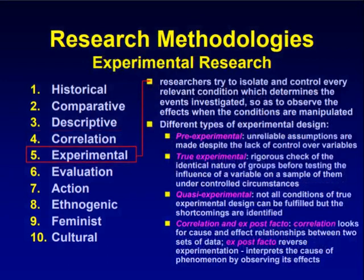In experimental research methodology, researchers try to isolate and control every relevant condition which determines the events investigated, so as to observe the effects when conditions are manipulated. Different types of experimental design include: pre-experimental, where unreliable assumptions are made despite the lack of control over variables; true experimental, with rigorous checks of the identical nature of groups before testing the influence of a variable under controlled circumstances; quasi-experimental, where not all conditions can be fulfilled but shortcomings are identified; and correlation and ex post facto, where ex post facto reverse experimentation interprets the cause of a phenomenon by observing its effects.